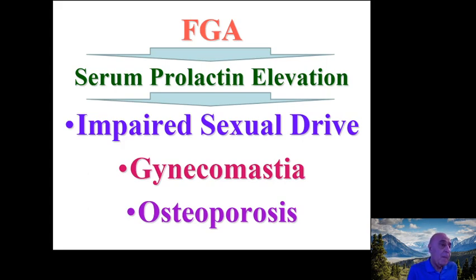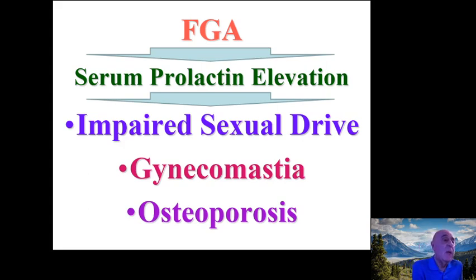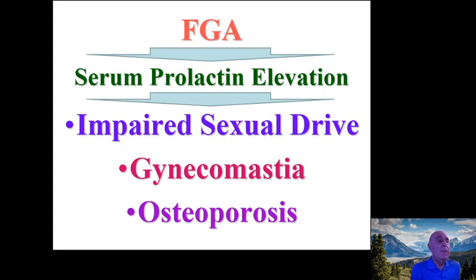First-generation antipsychotics block dopamine D2 receptors, leading to extrapyramidal side effects like Parkinsonism, dystonia, and tardive dyskinesia. Another problem is elevation of serum prolactin, which decreases testosterone levels and causes problems with libido and sexual drive. Additionally, patients may develop gynecomastia — swelling or congestion of the breast — and some may develop osteoporosis.